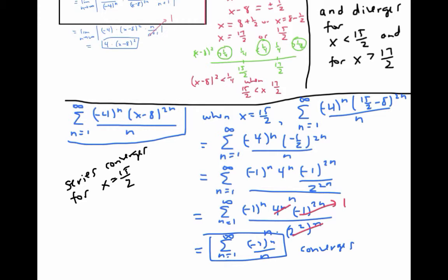When x equals 17 halves, we go through the same computation, just using 17 halves in place of 15 halves. That changes the negative one half to a positive one half. Now we have positive one to the two n, which is still always one, and everything else works the same. So we still have a convergent series.